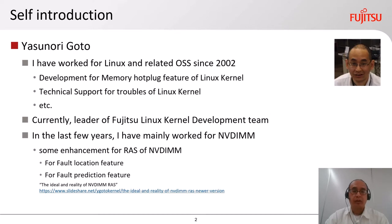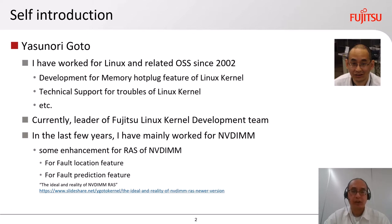Let me introduce myself. I have worked for Linux and related OSS since 2002. I developed the memory hotplug feature of Linux kernel and provided technical support for troubles over it. Currently, I am leader of Fujitsu's Linux kernel development team. In the last few years, I have mainly worked for NVDIMM — some enhancements for RAS of NVDIMM, for example fault location and fault prediction.